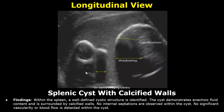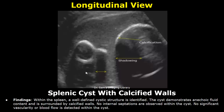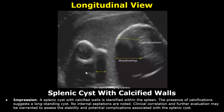Here is a splenic cyst with calcified walls. In the findings, a well-defined cystic structure is identified. It demonstrates anechoic fluid content and is surrounded by calcified walls. No internal septations are observed within the cyst. No significant vascularity or blood flow is detected. In the impression, a splenic cyst with calcified walls is identified within the spleen. The presence of calcifications suggests a long-standing cyst. No internal septations are noted, and in the end the line of clinical correlation is written.